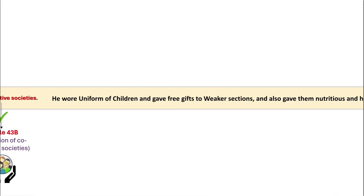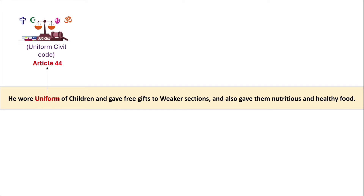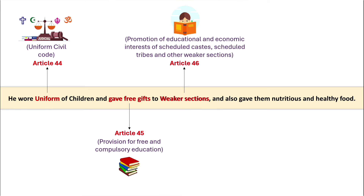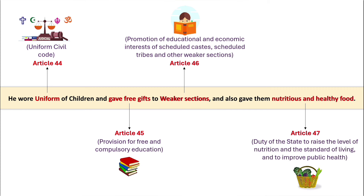Next, our director wore a uniform for children and gave free gifts to weaker sections, and also gave them nutritious and healthy food. 'Uniform' denotes Article 44 — uniform civil code for the citizens. 'Gave free gifts' denotes Article 45 — provision for free and compulsory education. 'Weaker section' denotes Article 46 — promotion of educational and economic interest of SCs, STs, and other weaker sections. And 'nutritious and healthy food' denotes Article 47 — duty of the state to raise the level of nutrition and the standard of living and to improve public health. This statement covered four articles: 44, 45, 46, and 47.